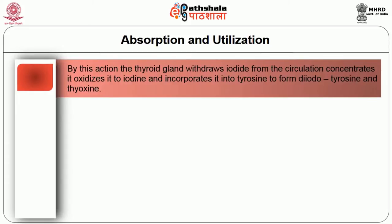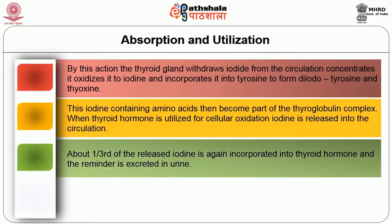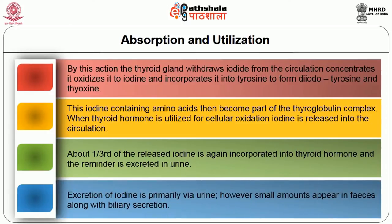By this action, the thyroid gland withdraws iodide from the circulation, concentrates and oxidizes it to form diiodothyroxine and thyroxine. These iodine-containing amino acids then become part of the thyroglobulin complex. When thyroid hormone is utilized for cellular oxidation, iodine is released into the circulation. About one third of the released iodine is again incorporated into thyroid hormone and the remainder is excreted in urine. Excretion of iodine is primarily via urine; however, small amounts appear in faeces along with biliary secretion.